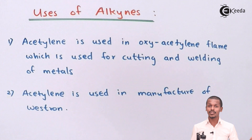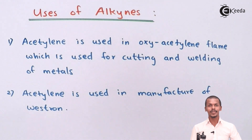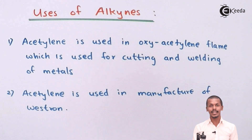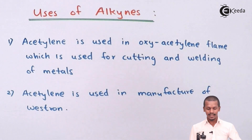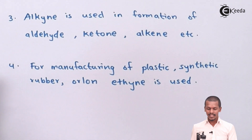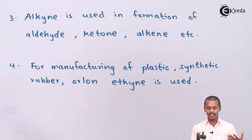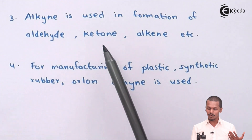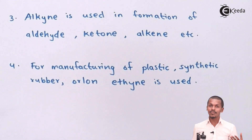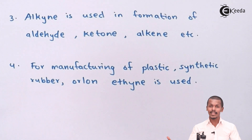Acetylene has been used in various purposes, like for the ripening of fruits and the formation of various other chemicals. From the overall reactions we have studied, alkynes can be used in the formation of aldehydes, ketones, alkenes, and so on.